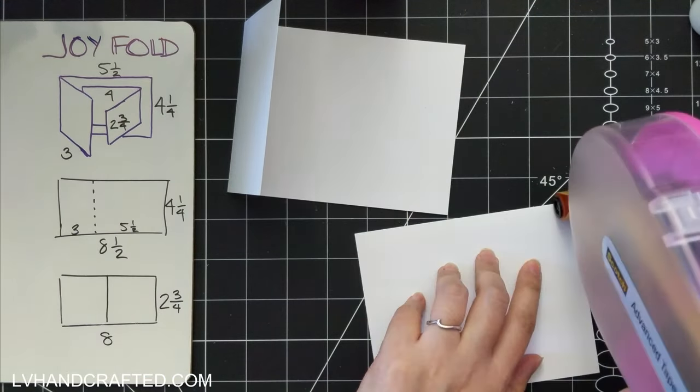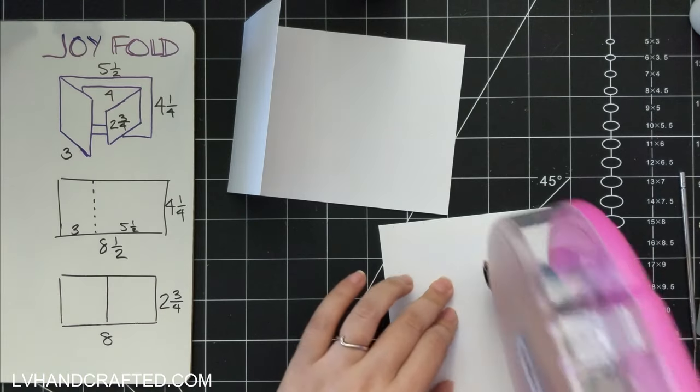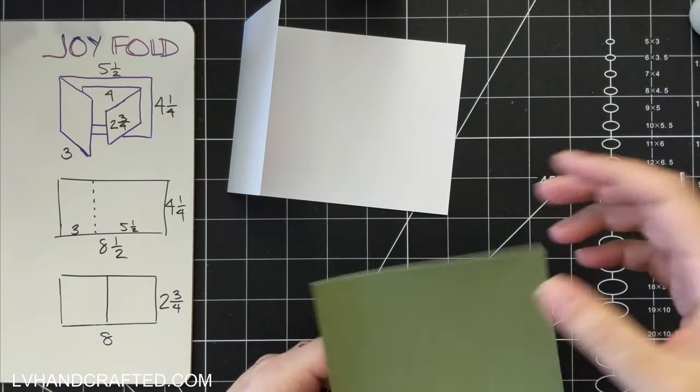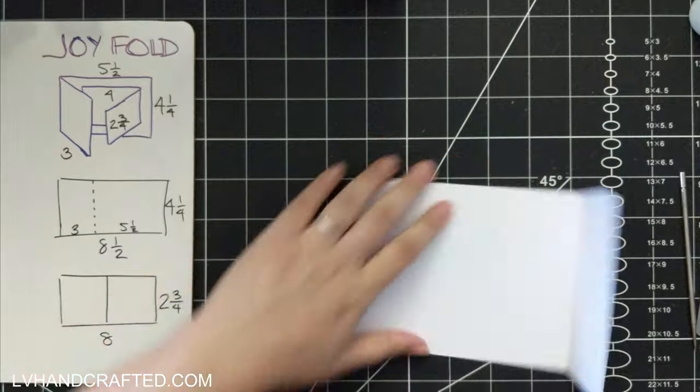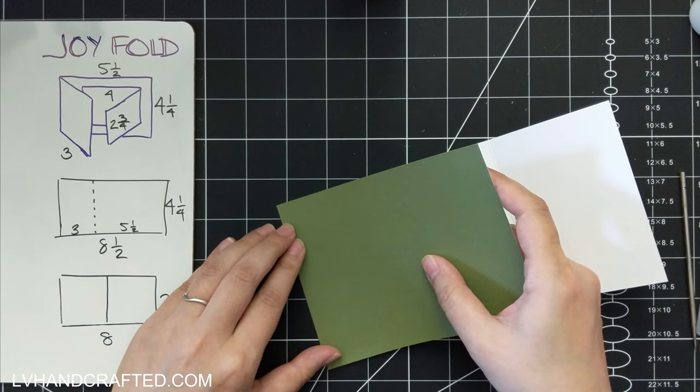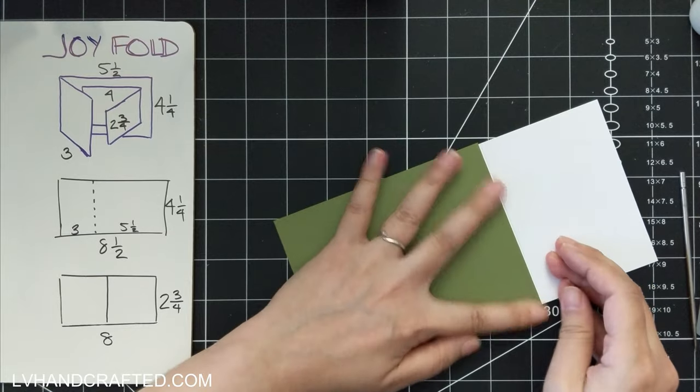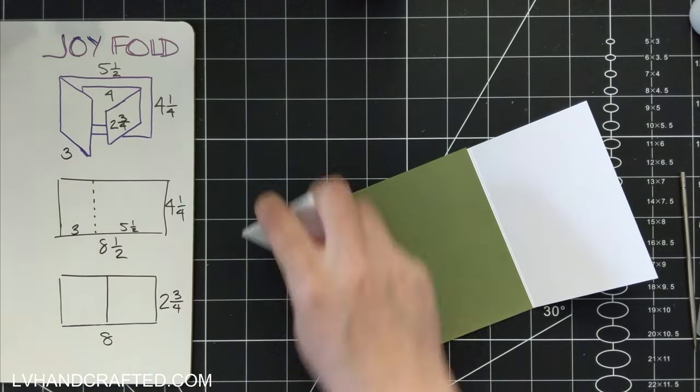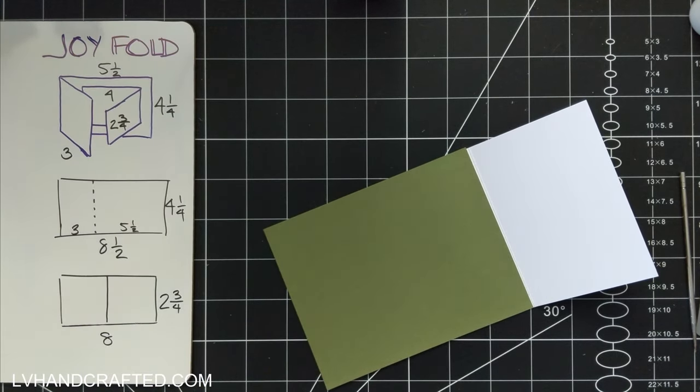That's going to be our card base and part of the front of the card. The second piece that you'll need to cut will be 8 inches wide by 2¾ inches high, and you want to score that directly in half at 4 inches.